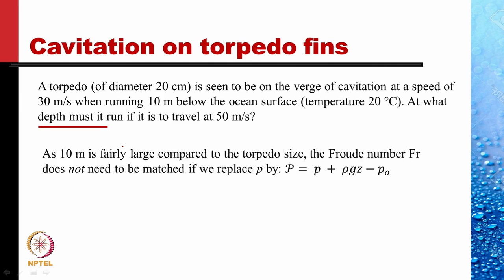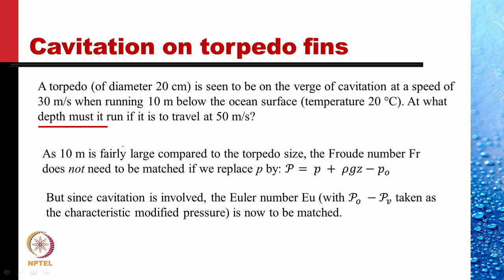As 10 meters is fairly large compared to the torpedo size of 20 centimeters, the Froude number does not need to be matched and we can ignore the free surface. We can replace the pressure by the non-gravitational pressure p-script as p plus rho g z minus p naught. But since cavitation is involved, the Euler number must now be matched, defined with p naught minus p_v as the characteristic modified pressure. These two values — one for the prototype and one for the model — must match.